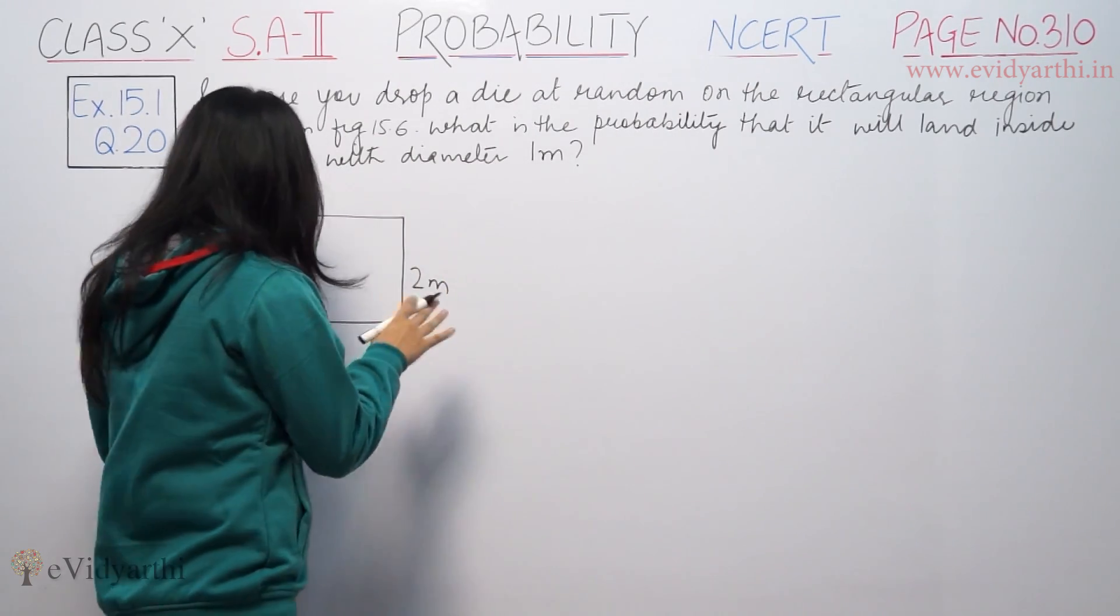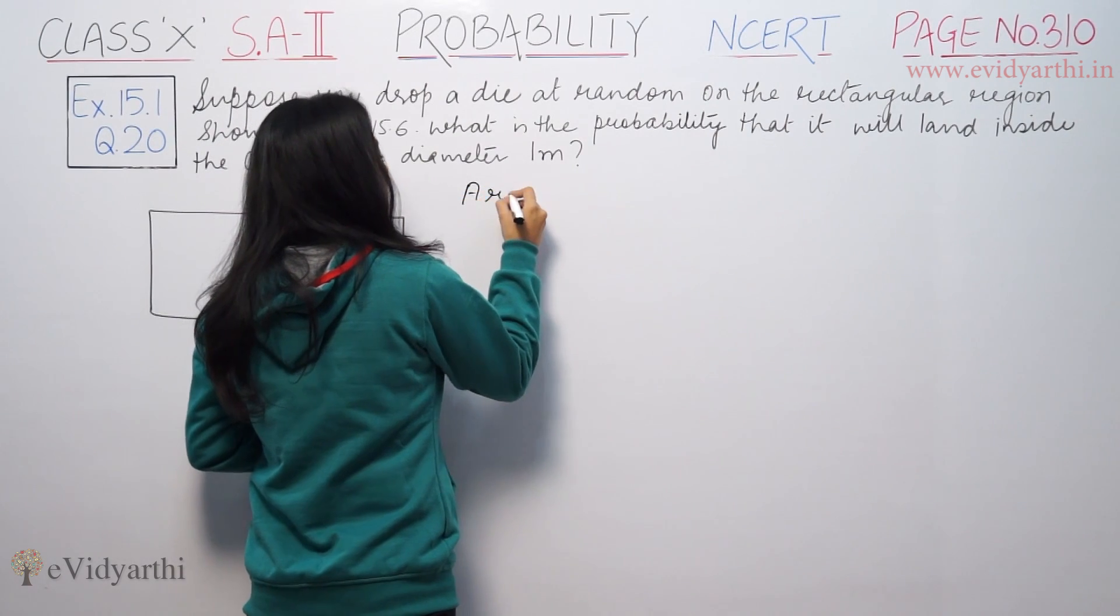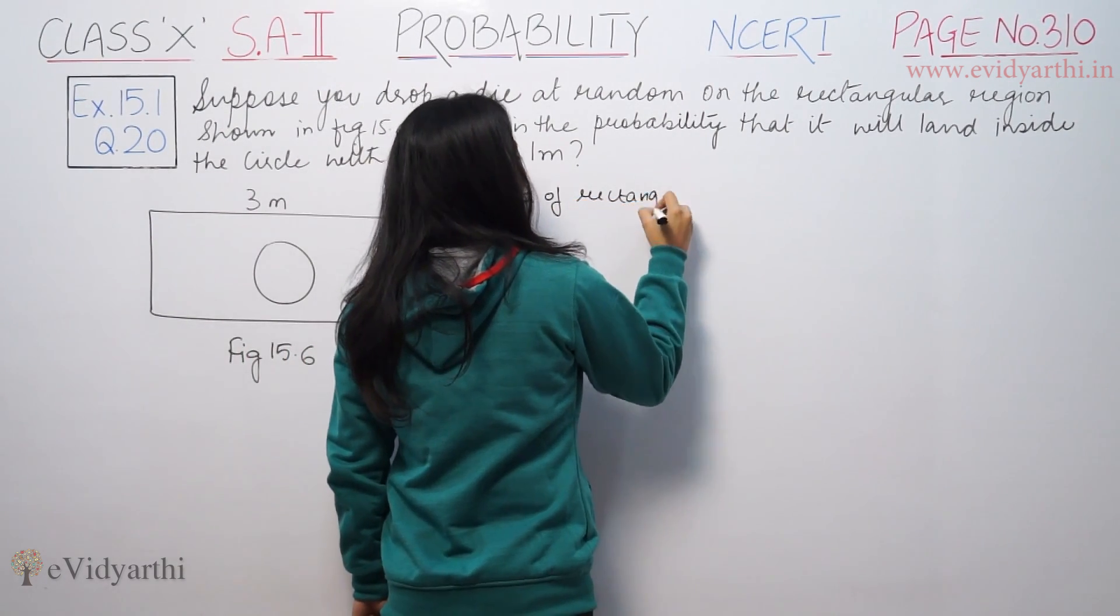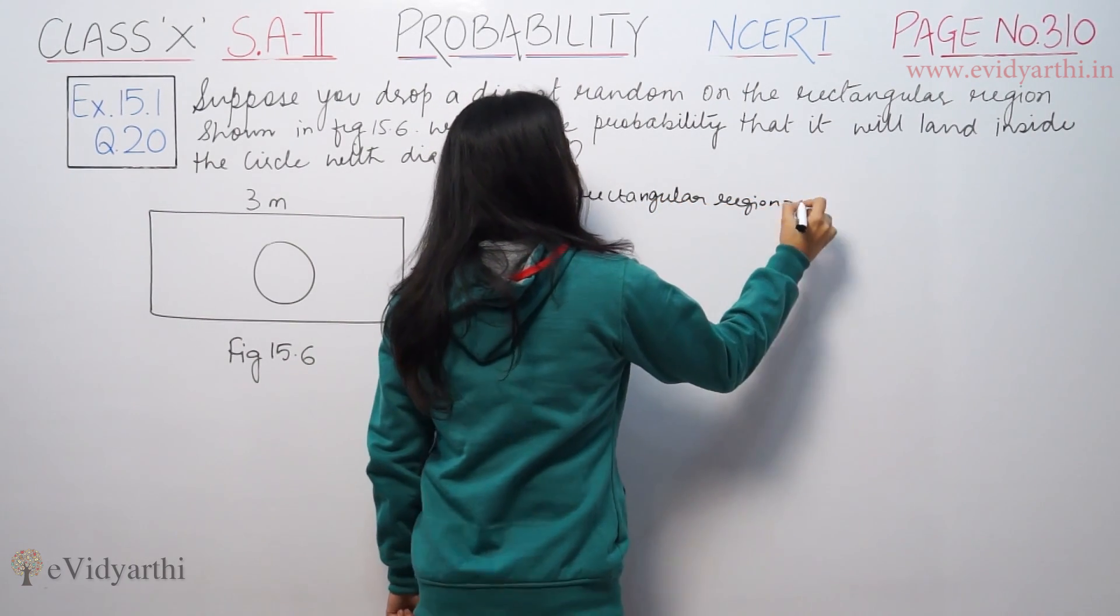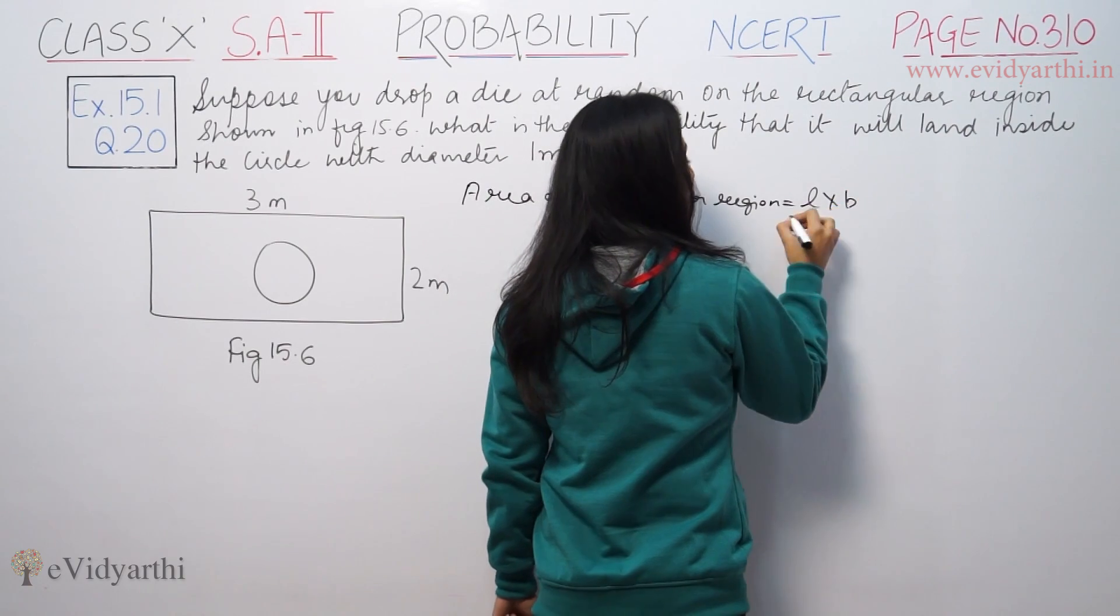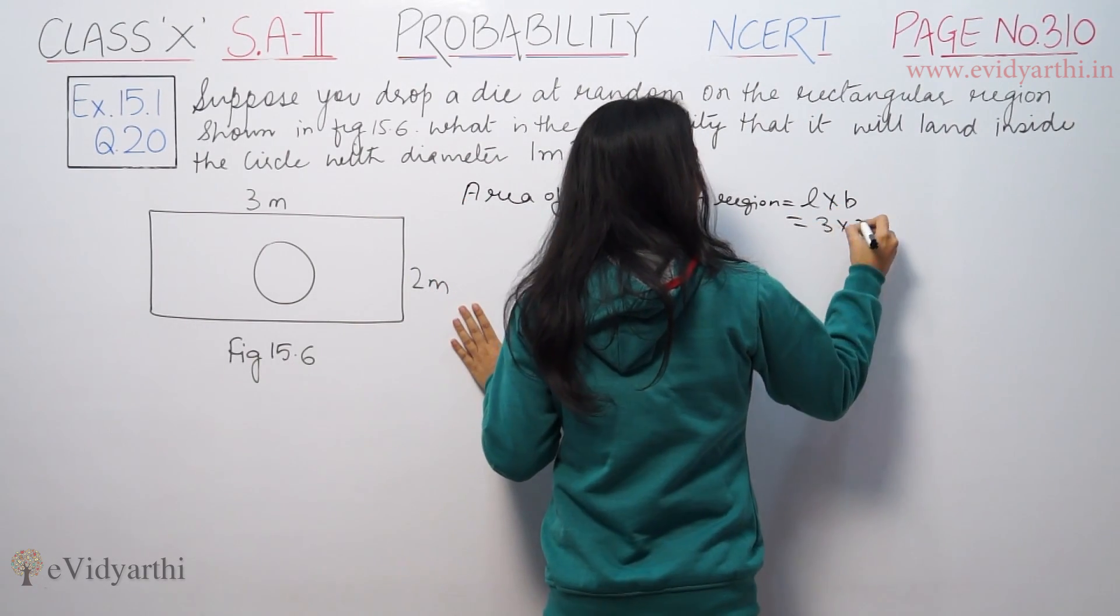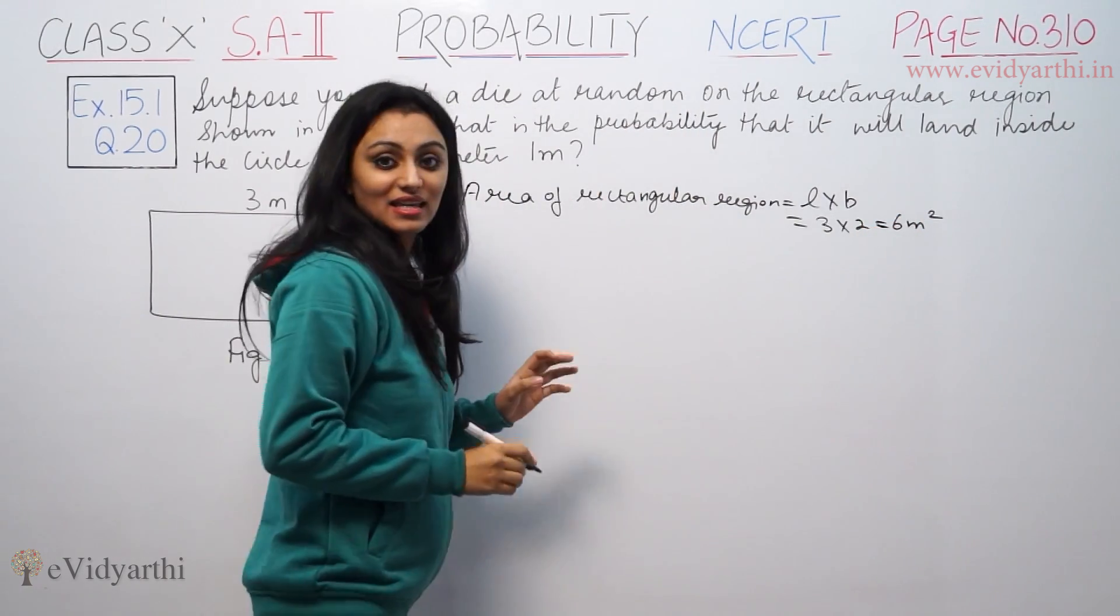So, first of all, we need to find the area of the rectangular region. Area of rectangular region is length multiplied by breadth. Length is given as 3, breadth is 2. So, 3 multiplied by 2 is 6 meters square. This is the rectangular region.